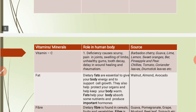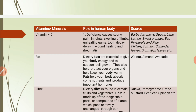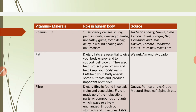Vitamin C, also called ascorbic acid, is essential for the body. Deficiency causes scurvy, pain in joints, swelling of limbs, unhealthy gums, tooth decay, delay in wound healing, and rheumatism. Sources of vitamin C include Barbados cherry, guava, lime, lemon, sweet oranges, pear, pineapple, and vegetables such as chilies, tomato, coriander leaves, drumstick leaves, and mint.